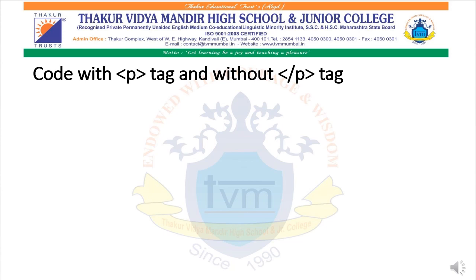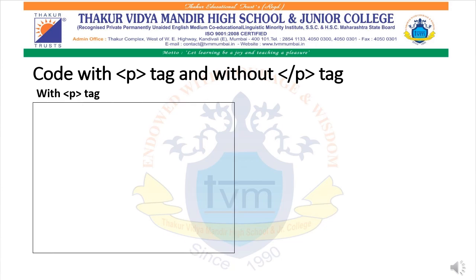As we learned to construct basic HTML structure in our last video, the code starts with an open HTML tag and then comes the open head tag. Inside the head tag, we write the open title tag with the title of the web page, then close the title tag and close the head tag. Now open the body tag. Inside the body tag, we are going to write three sets of paragraphs.